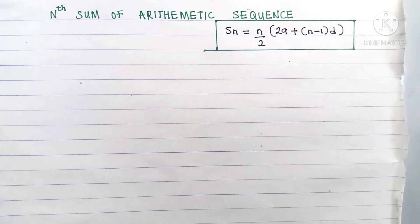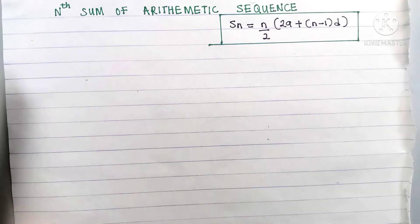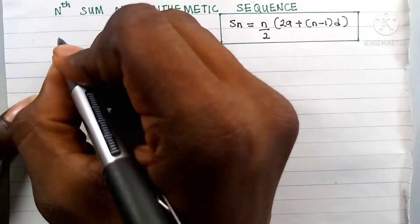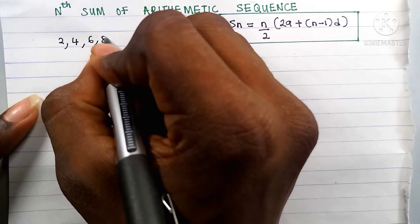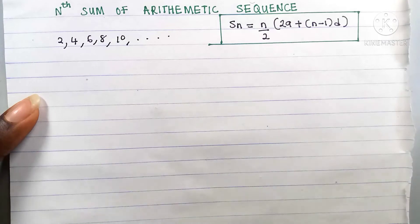Welcome back guys. In this video we're going to learn how to prove that the nth sum of an arithmetic sequence is equal to n divided by 2 times 2a plus n minus 1 times d. You may already know what an arithmetic sequence is, but in case you might have forgotten, an arithmetic sequence is something that looks like this: 2, 4, 6, 8, 10.